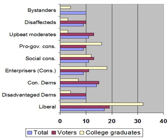Conservatives commonly defend the notional status quo of some point in the past, believing that the United States has deviated significantly from it, and advocating more traditional stands on social issues, protection of gun rights, and less government intervention in the economy. Libertarians, or classical liberals, tend to support strong civil liberties, peace, more freedom of choice including economic freedom, and are skeptical of government's ability to solve problems.